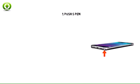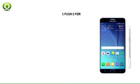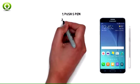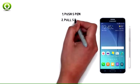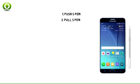Your S Pen is located in the bottom right corner of your phone. Push the S Pen to click it out of place. Pull the S Pen out.